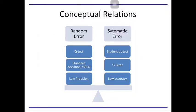Finally, I would like to relate all these concepts to random error and systematic error. Measurements that have low precision or a very large percent RSD may contain random error. In order to detect and reject outliers arising from random error, we use Q-test. On the other hand, if the measurement has low accuracy or a high percent error, most likely there is systematic error. To detect systematic error, we use the Student's T-test — either case 1, the one-sample T-test, or case 2, the two-sample T-test. That is the end of our lesson this evening.